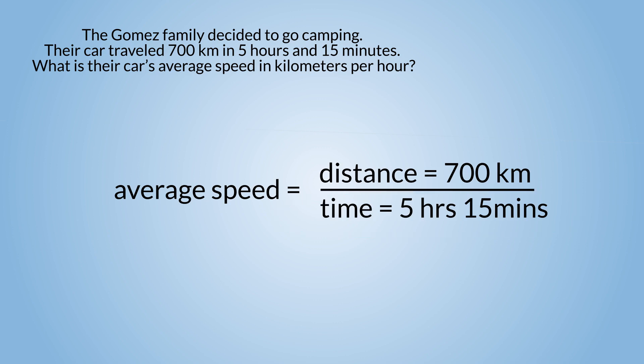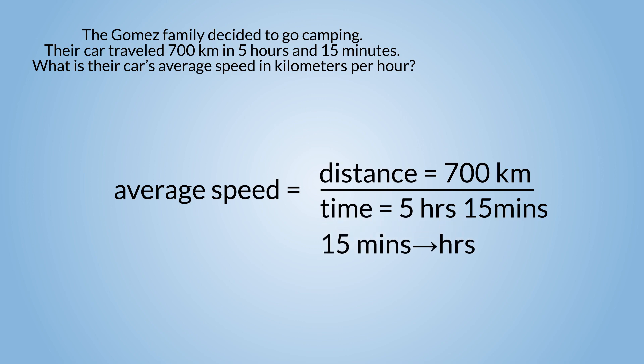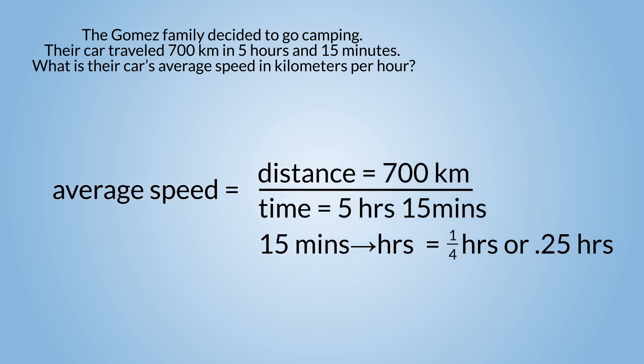We need to make them of the same unit first before we can proceed. Converting 15 minutes to hours, we get 1 fourth hours or 0.25 hours, making our time 5.25 hours.